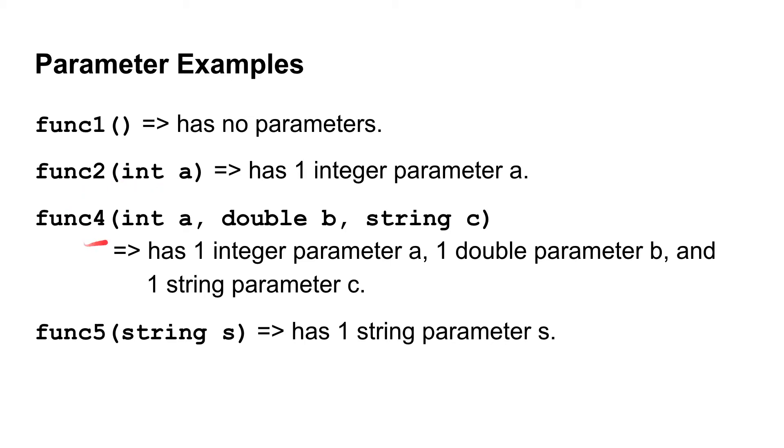This func4 has three parameters. The first one being int a, the second one being double b, and the third one being string c. When you call this function, you would need to pass it three parameters. And those parameters are separated by commas. You would pass it an integer in the first place, comma, a double in the second place, comma, a string in the third place.